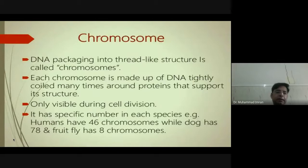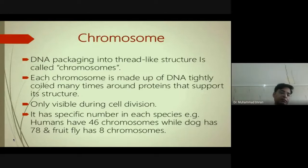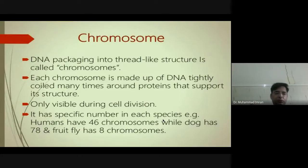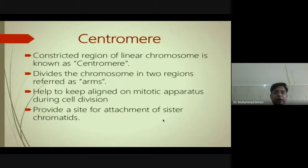DNA packaged into thread-like structures is called a chromosome. Chromosomes are made of two things: histone proteins and DNA. DNA carries a negative charge and histones carry a positive charge, so they strongly bind to each other. Each chromosome is made of DNA tightly coiled many times around supporting proteins. The structure is only visible during cell division and has a specific number in each species — humans have 46 chromosomes (23 pairs), dogs have 78, and fruit flies have 8.